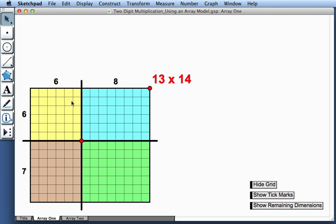It's an array with 13 rows and 14 columns. Notice that our array is divided into four smaller arrays: a yellow array, a blue array, and a brown and a green array.